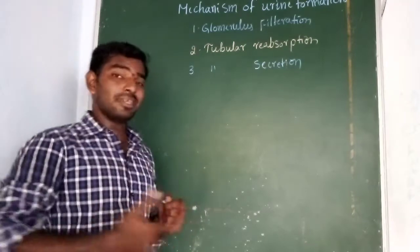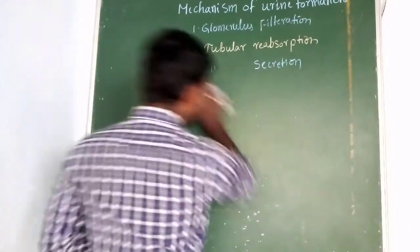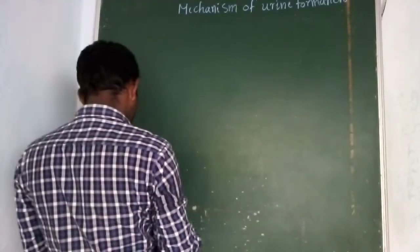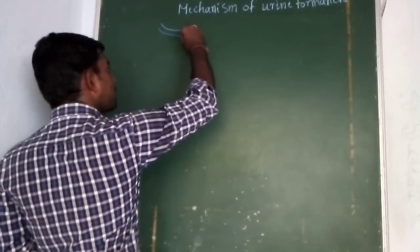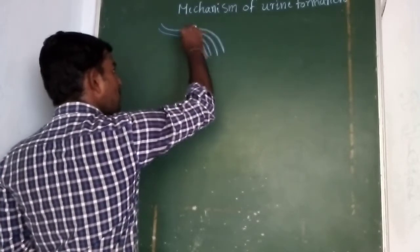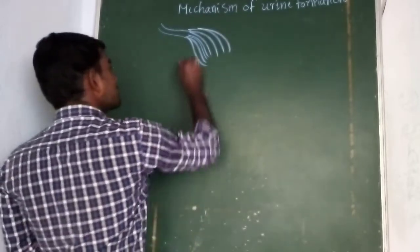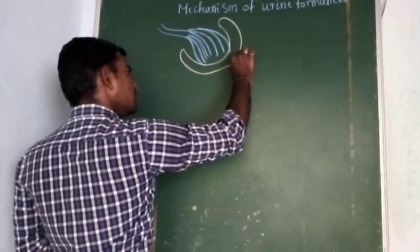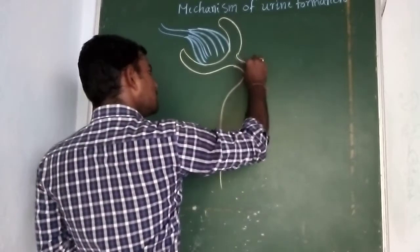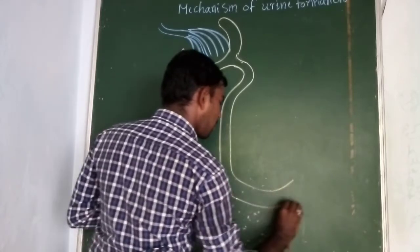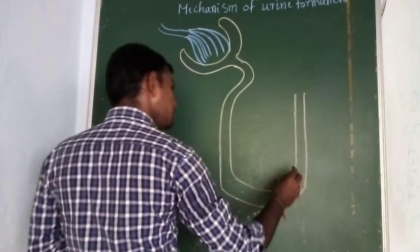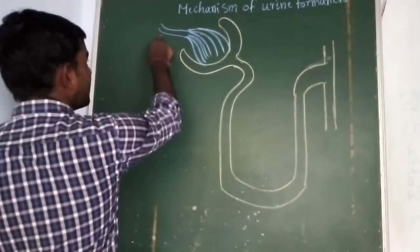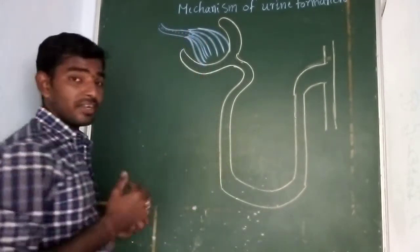Let us see step by step how the process takes place in humans. The first process is glomerular filtration. The renal artery carries blood that reaches the afferent arteriole, and from the afferent arteriole the blood reaches the glomerulus. The afferent arteriole forms a network of capillaries which we call the glomerulus. The glomerulus is present in a complex structure called Bowman's capsule, and the Bowman's capsule and glomerulus together form the Malpighian body.